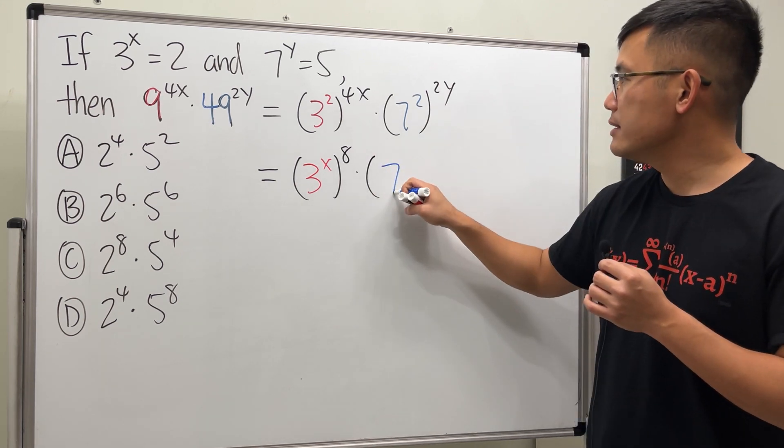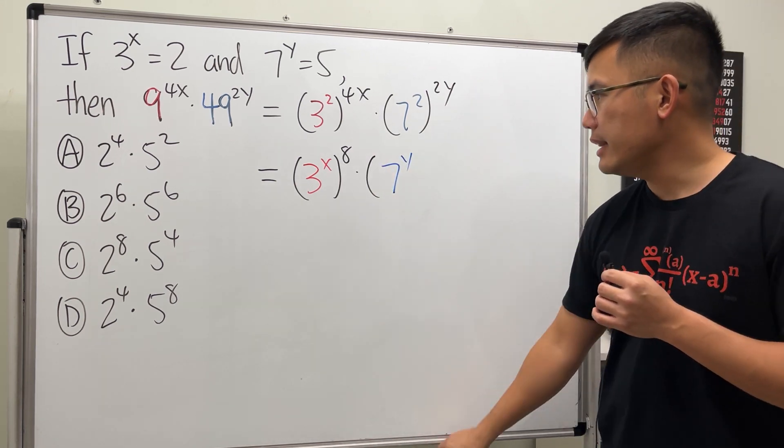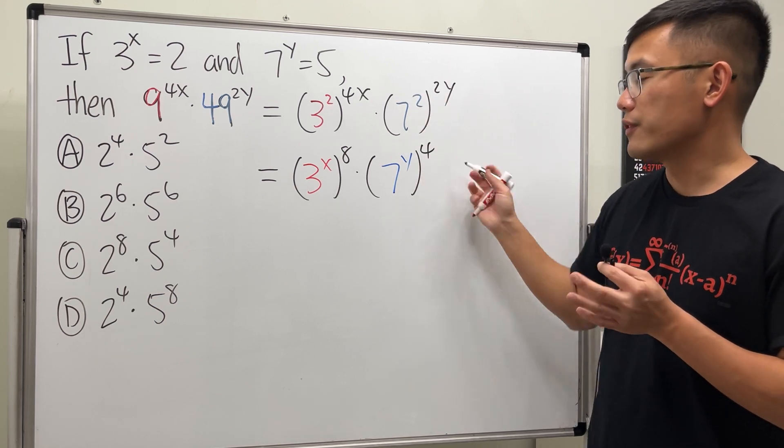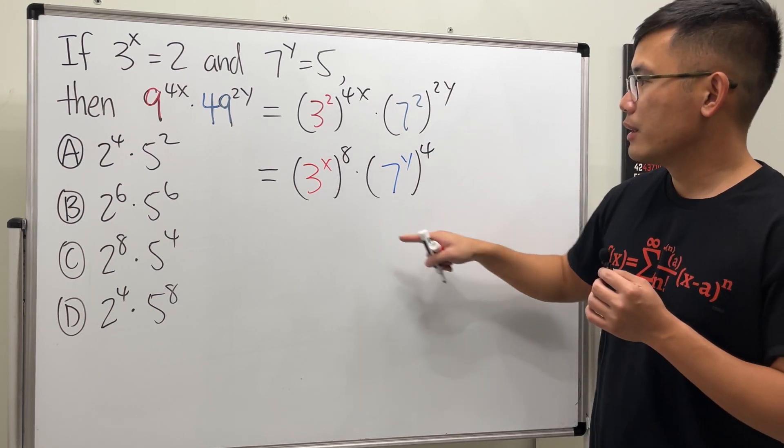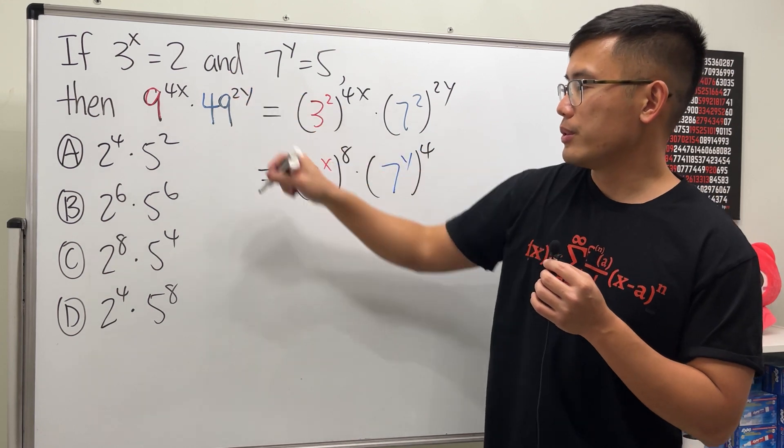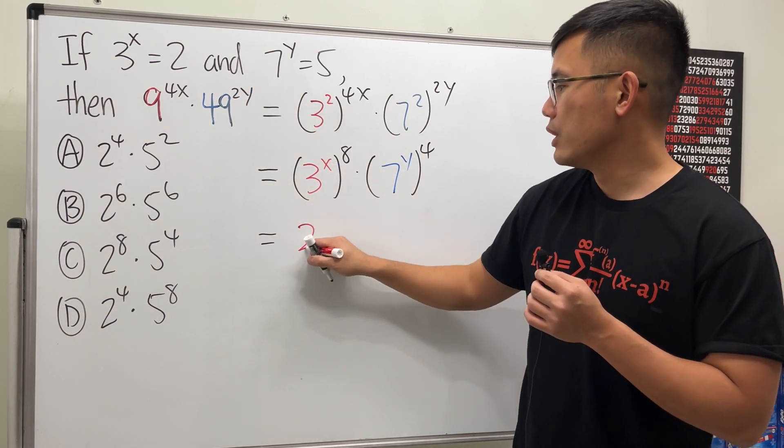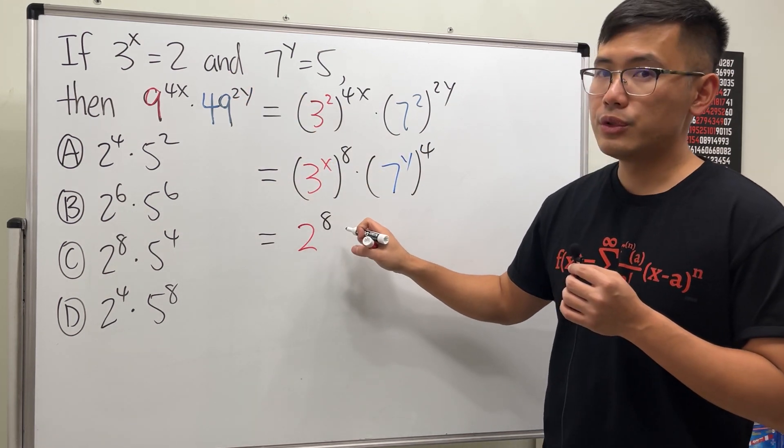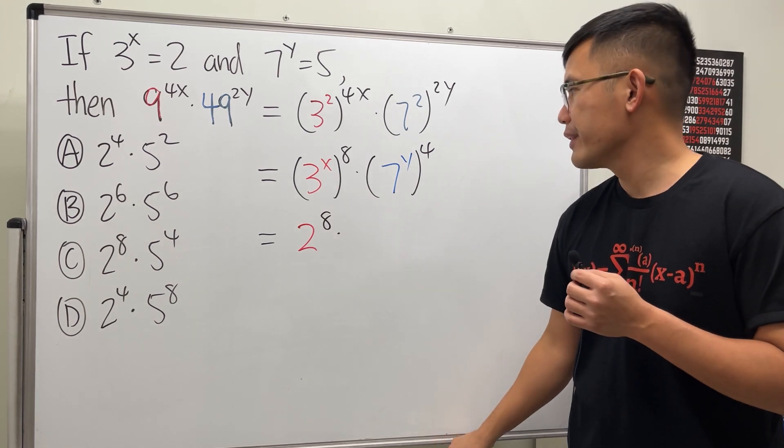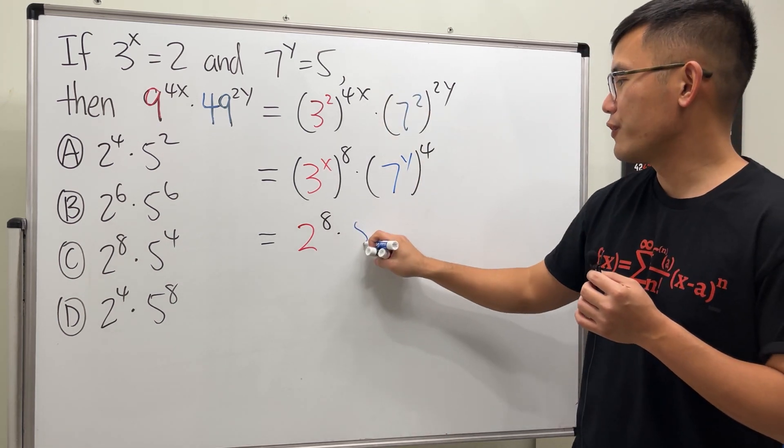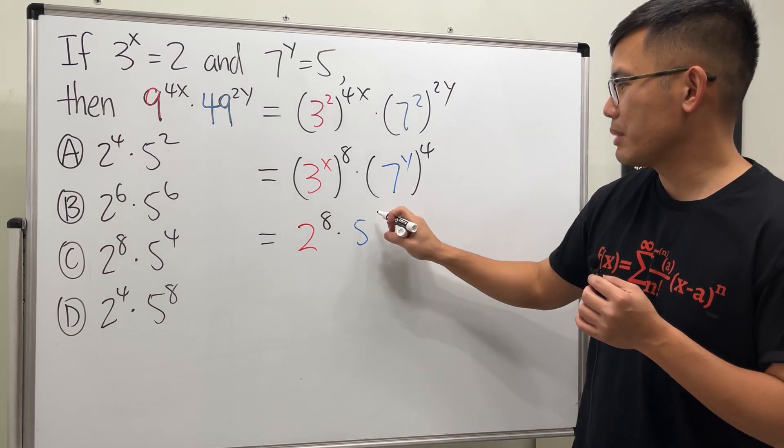And then we do 2 times 2 which is 4, because this way we know 3 to the x power is equal to 2. So here we have 2 to the 8th power, and we just have to multiply this by 7 to the y which is equal to 5, so 5 to the 4th power.